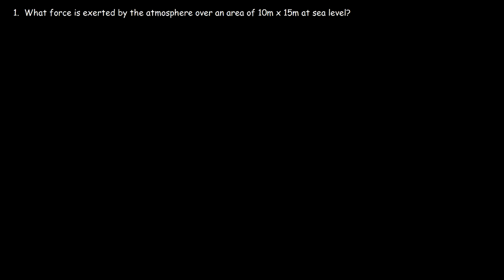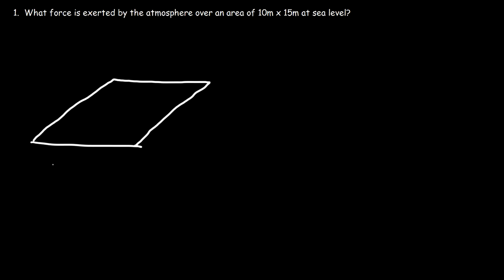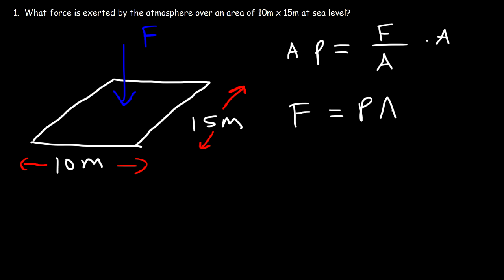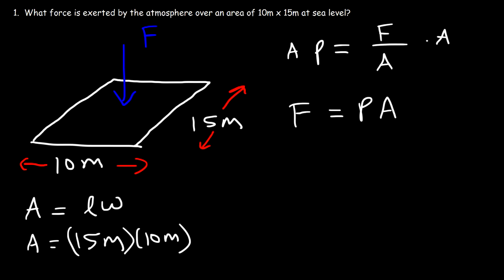Now let's work on some problems. Problem one: what force is exerted by the atmosphere over an area of 10 meters by 15 meters at sea level? Let's draw the surface — this side is 10 meters and this side is 15 meters. To calculate the force, we use pressure equals force divided by area, so force equals pressure times area. The area is length times width: 15 times 10 equals 150 square meters.